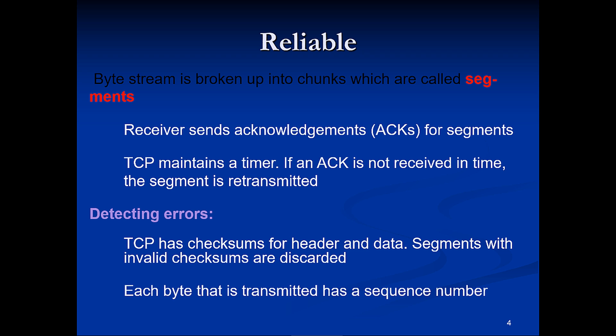The byte stream is broken up into chunks called segments. The receiver sends an acknowledgement for each received segment. TCP maintains a timer, and if an acknowledgement is not received within the appropriate time, it will detect an error and then resend. TCP also has a checksum for headers and data, meaning segments with invalid checksums are discarded and then resent.